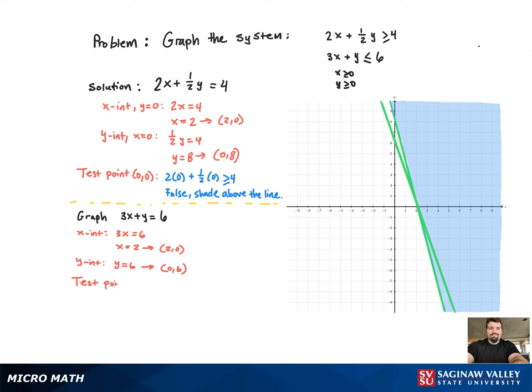We're going to use a test point again so we can figure out which region to shade. We're going to use (0, 0) for convenience again. And when we plug that in, we get 0 less than or equal to 6, which is true. So we shade the region with (0, 0), which is below the line, using a different color.